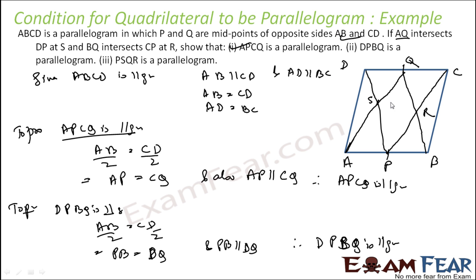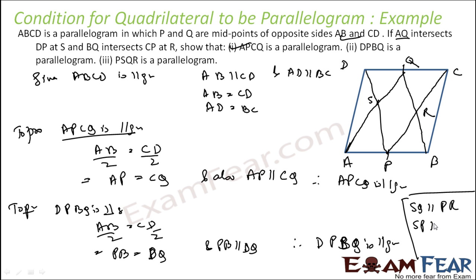Now we have to prove PQRS is a parallelogram. Since DPBQ is a parallelogram, SP is parallel to QR. Since APCQ is a parallelogram, SQ is parallel to PR. Therefore, since opposite pairs of sides are parallel, PQRS is a parallelogram.